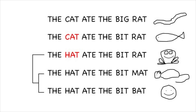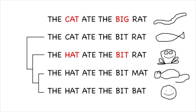The fish differs from the frog by one mutation — 'cat' versus 'hat' — but from the mouse and human by two mutations: 'cat' versus 'hat,' and 'rat' versus 'mat' or 'bat.' The worm differs from the fish by one mutation, 'big' versus 'bit,' from the frog by two mutations, 'cat' versus 'hat' and 'big' versus 'bit,' and so on. So now we can see the gene tree that shows how this sequence evolved over long periods of time, with incremental changes to gene sequences each time a new branch appears on the tree.